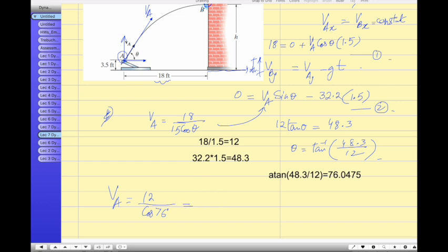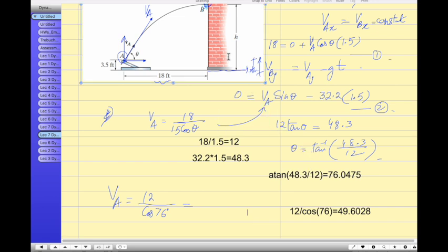And on the other hand, if I do the math for VA 12 divided by cosine 76, it is 49.6. The initial velocity comes out to be, let me check, is it 49.6? Do you agree with me? So now we have found both the angle, which is 76 degrees, and we have found the velocity.